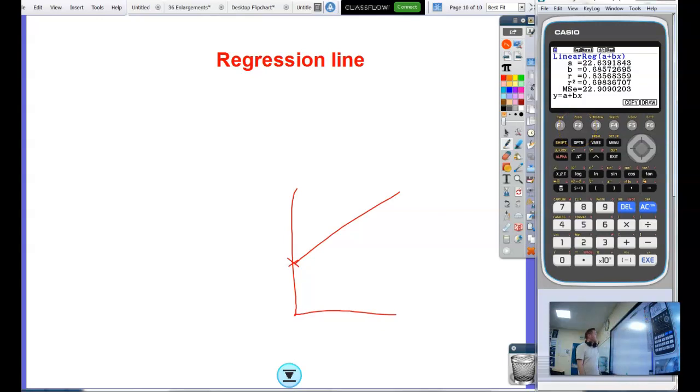And yeah, there we go. That is some stuff on bivariate data on the GDC. There we go.